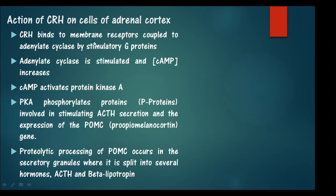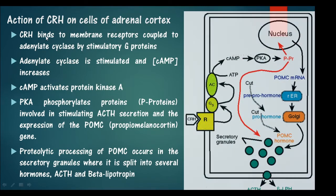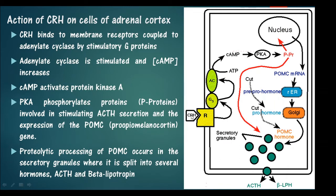Regarding the action of CRH on adrenal cortex cells: CRH binds to a membrane receptor that is coupled to a stimulatory G protein called Gs, which activates adenylyl cyclase. Adenylyl cyclase produces cyclic AMP from ATP. The cyclic AMP then activates protein kinase A, and protein kinase A phosphorylates several proteins.